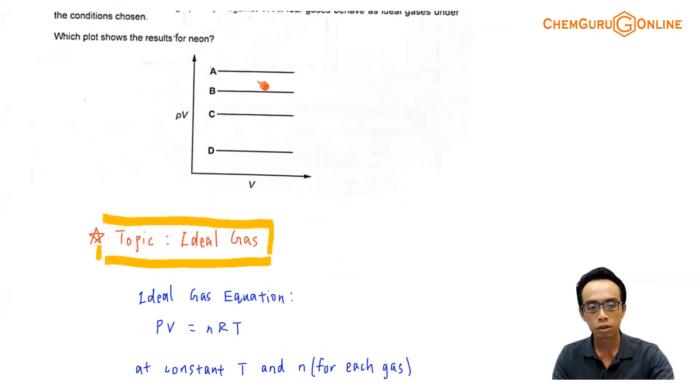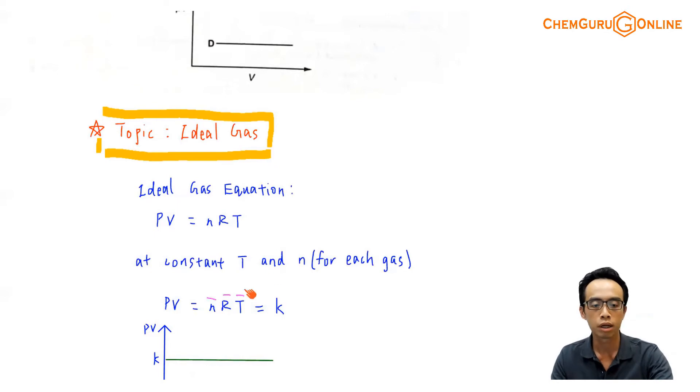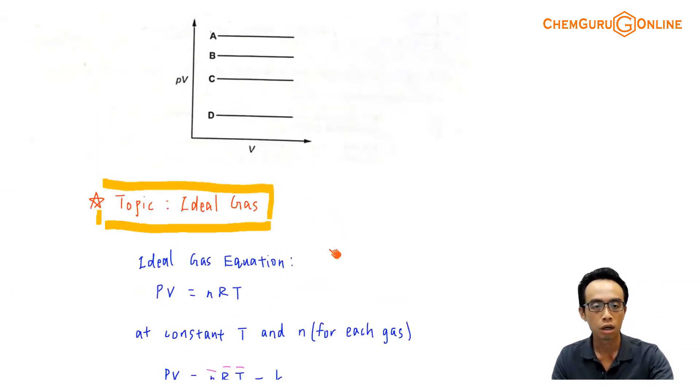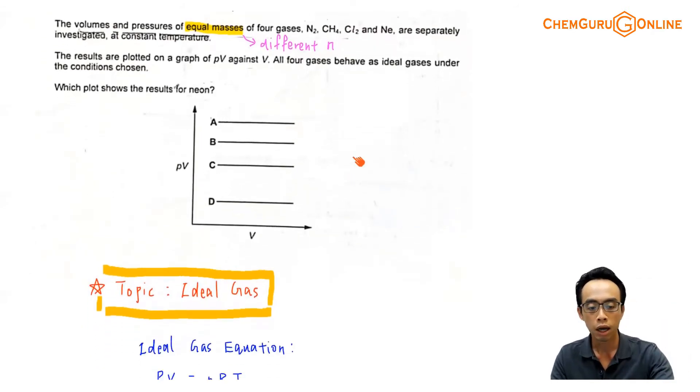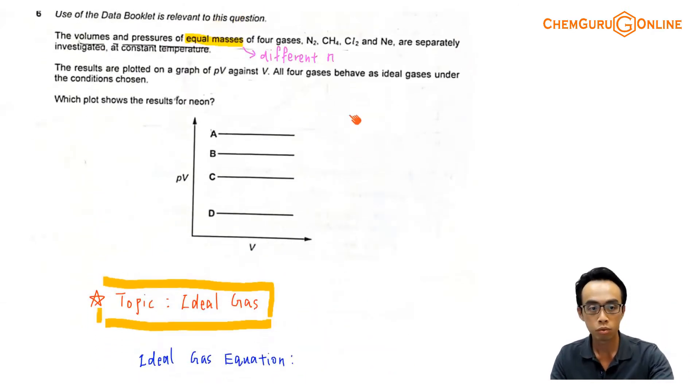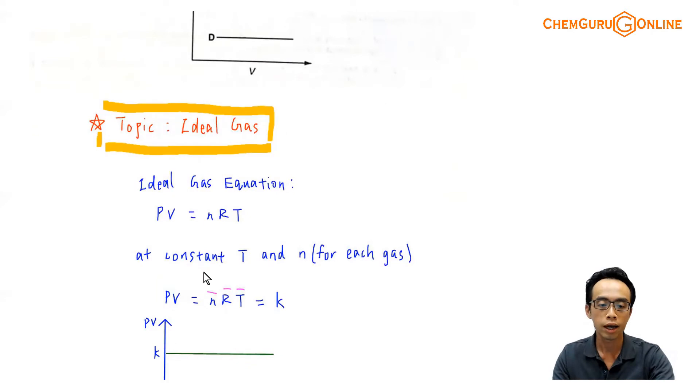Now, you'll notice my four options here A, B, C, D, the differences will be different K values and different NRT values. Now R will be a constant amongst all these different gases, regardless of whether this is N2, CH4, Cl2, Ne, R will be the same, and temperature will also be constant because question mentioned that the temperature is constant for all these four gases. So the reason why we have all these different K values for all these different gases must be because of N. I have a different number of moles.